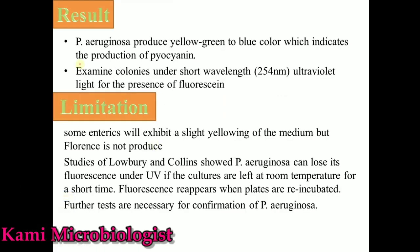As we discussed, this medium is mostly used for Pseudomonas isolation and identification. Pseudomonas mostly produces yellow to green-blue color colonies, indicating the production of pyocyanin, the green pigment. When the colonies of Pseudomonas aeruginosa are examined under short wavelength ultraviolet light, they mostly show fluorescence, which is characteristic of Pseudomonas aeruginosa.